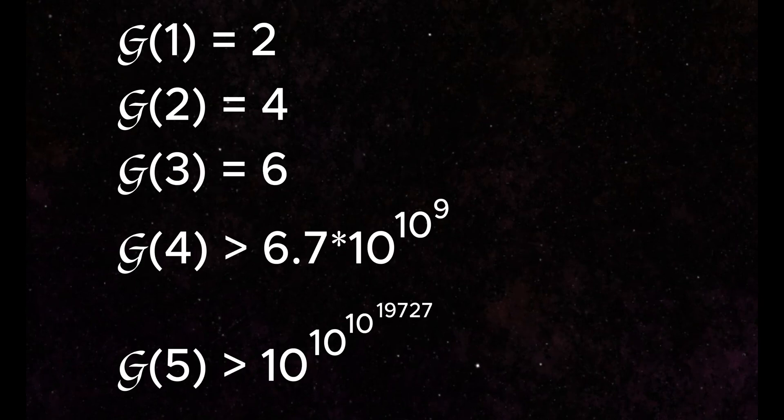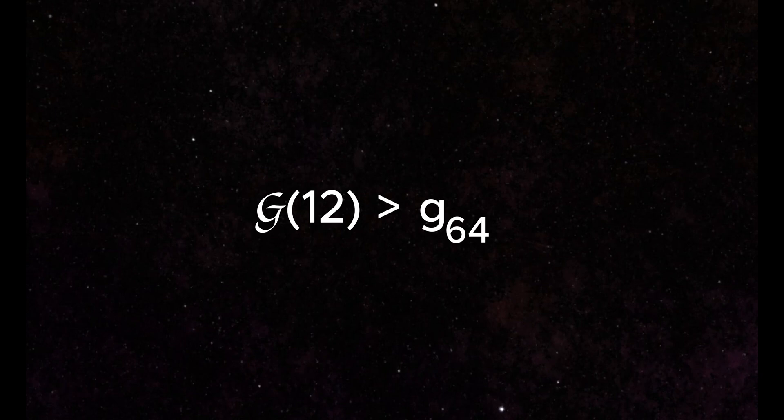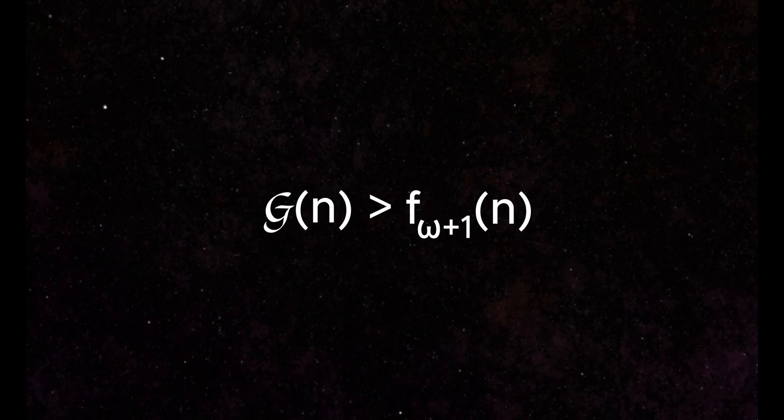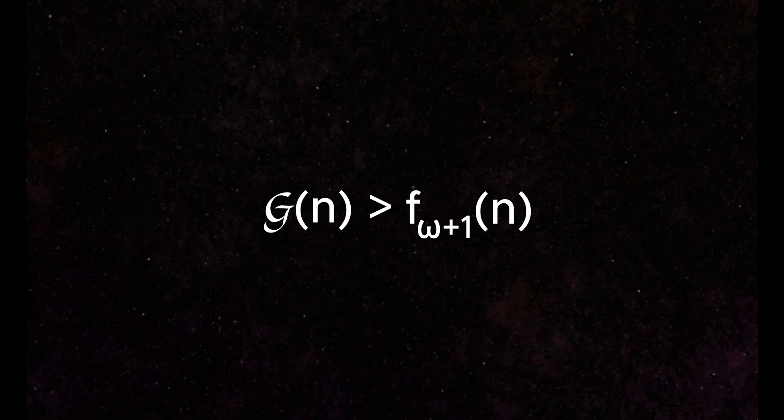So fast, in fact. Let's use Graham's number as a comparison. Graham's number, if you recall, takes 64 steps using the fastest recursive functions we have discussed thus far. Well, the Goodstein function blows past it in just 12 steps. That means the Goodstein function is much faster than the f_omega+1 function from the fast-growing hierarchy.